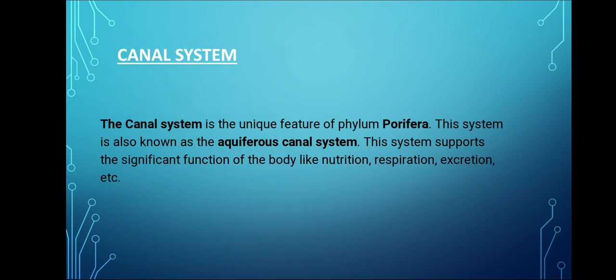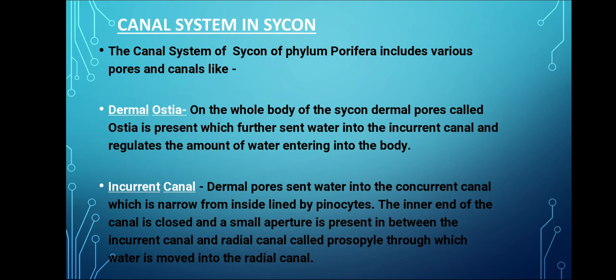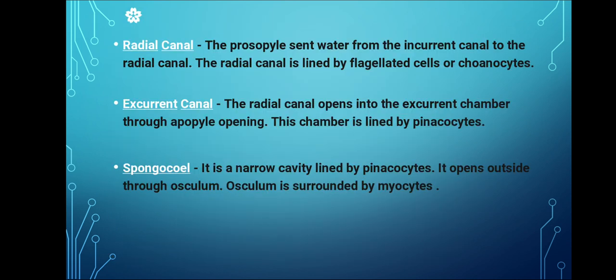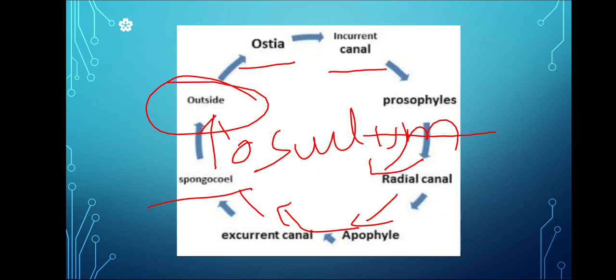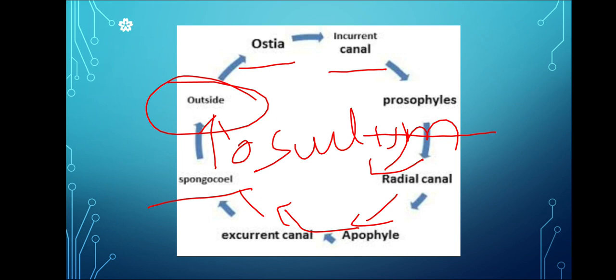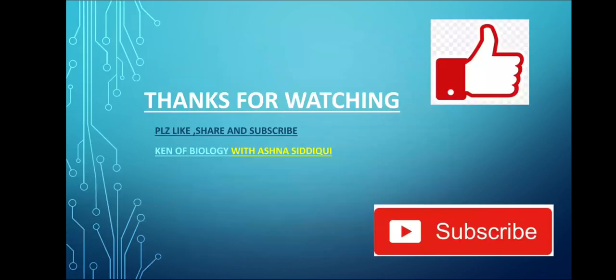Let us have a short revision. We have seen the canal system of Sycon. It is a very unique feature — an aquiferous canal system. The canal system consists of: Dermal Ostia, Incurrent Canal, Radial Canal, Excurrent Canal, and Spongocoel. These are our five to six topics, which we have cleared properly with the help of diagrams. You will probably understand them well.